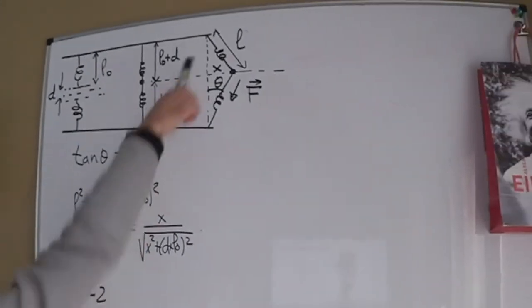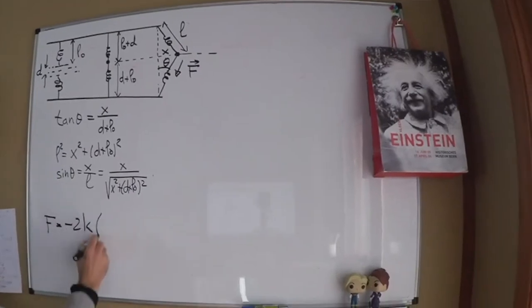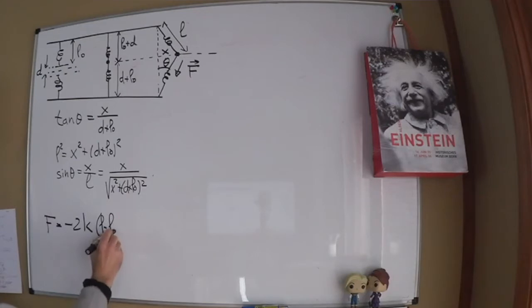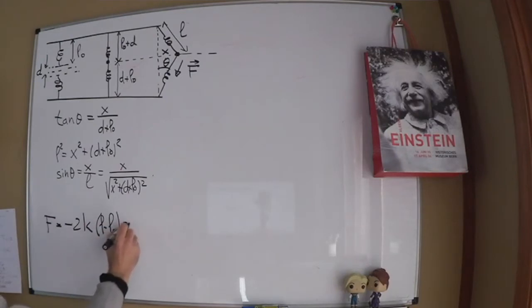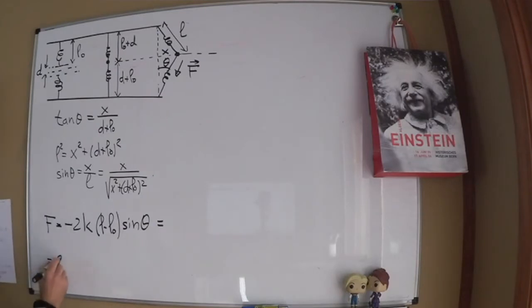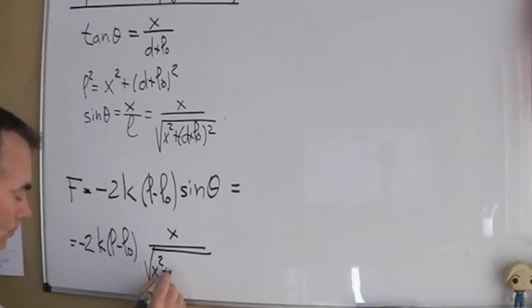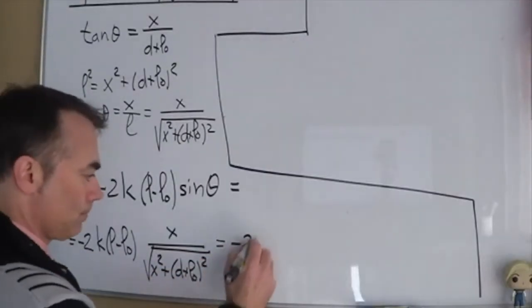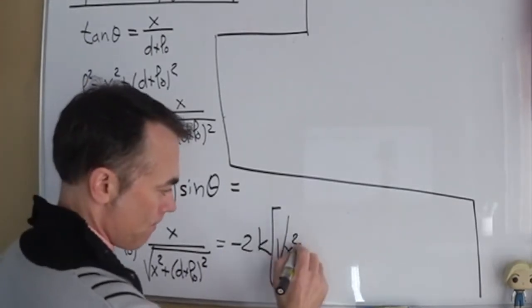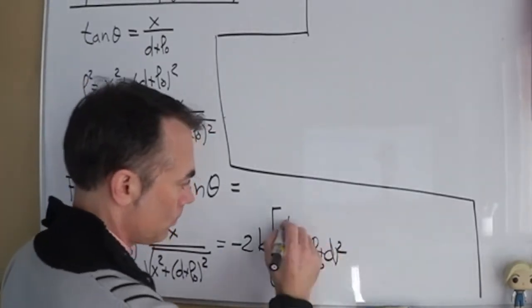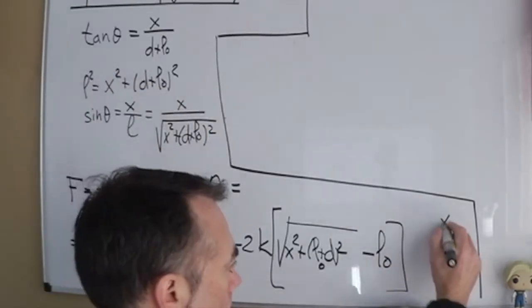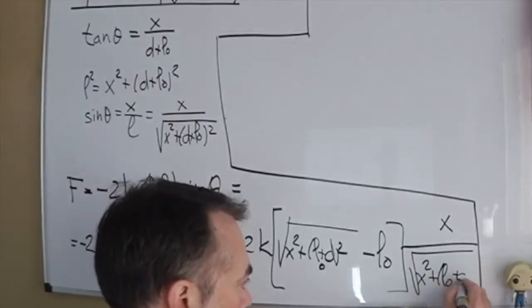Now let's write the force on the x-axis, F sub x. F sub x is equal to minus — for the recovery force — 2, as there are two springs, times k times (L minus L0), which is the amount stretched of the spring, times the sine of theta, for the projection on the x-axis. I substitute the sine of theta and also the length L here. So the force F sub x is this questionably beautiful expression.